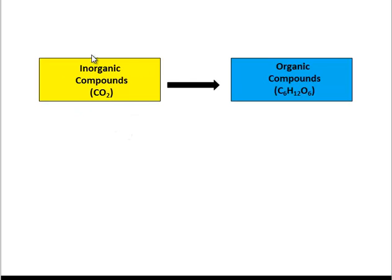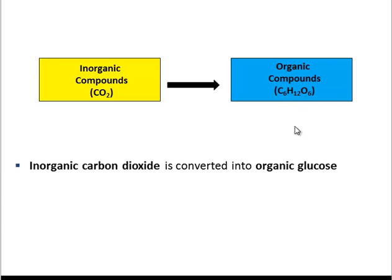That carbon dioxide has to be converted from an inorganic form into an organic form, like glucose, C6H12O6. Then we can get energy from something like glucose. So plants do us a huge favor by converting carbon dioxide from an inorganic to an organic form.